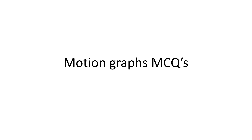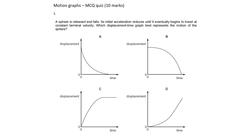We're working through some motion graphs multiple choice questions for the A-level physics mechanics topic. There are 10 questions. For each question, I would recommend pausing the video and having a think about the question and deciding which response you're going to give, before then pressing play to reveal the solution.